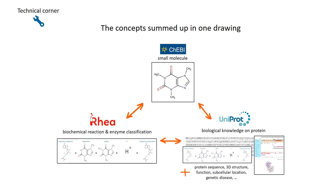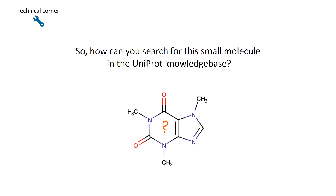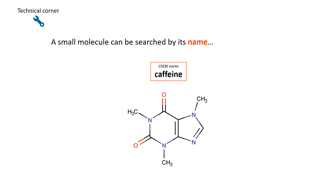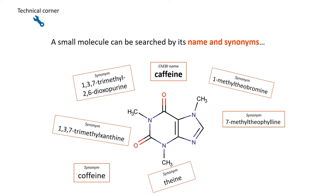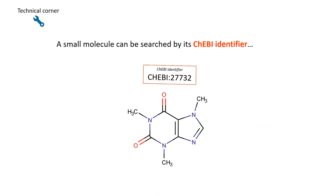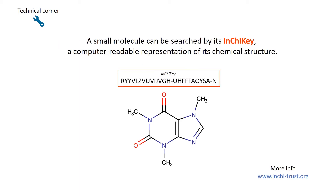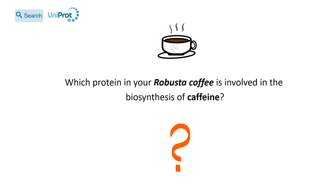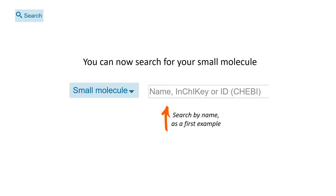So how can we search for the small molecule caffeine in the UniProt knowledge base? A small molecule can be described and searched by its name, but also by alternative names or synonyms, its ChEBI molecular identifier, or finally by its InChI key, which is a computer-readable representation of its chemical structure. We will start by entering its name, although we could also have used its ChEBI identifier or InChI key.